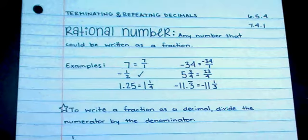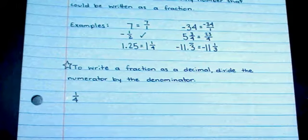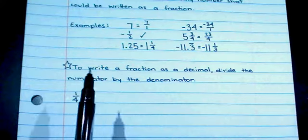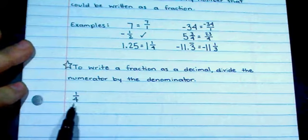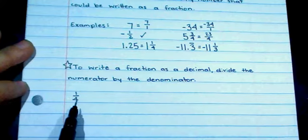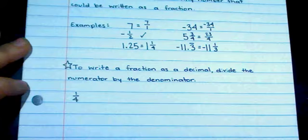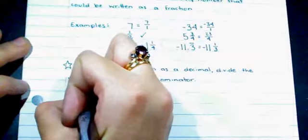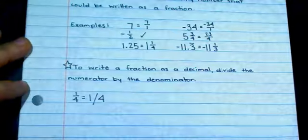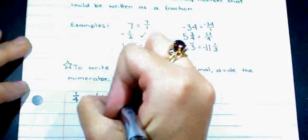For the first example, I'm going to look at the fraction 1 fourth. With 1 fourth, I'm just going to divide my numerator by my denominator in order to determine this fraction in decimal form. This is one of the most common fractions you will see, and one you might have memorized. However, I'm going to show the procedure for more complicated ones. The fraction bar can also be a division symbol, which means I'm dividing 1 by 4.